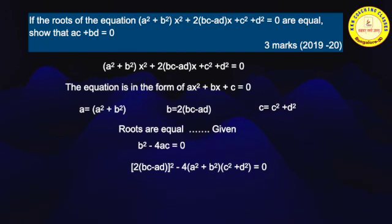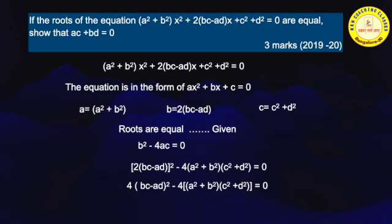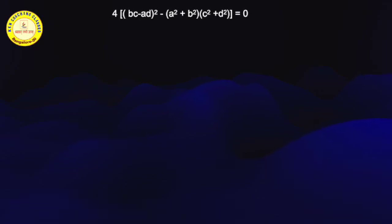Now, [2(bc - ad)]² — 2² becomes 4 — so we simplify the b² part. We get 4(bc - ad)² - 4(a² + b²)(c² + d²). In both terms, there is a factor of 4. I take 4 as a common factor: 4[(bc - ad)² - (a² + b²)(c² + d²)] = 0.